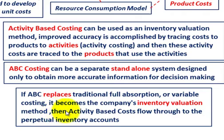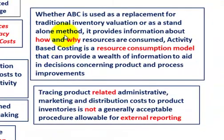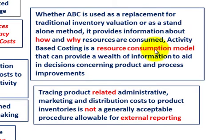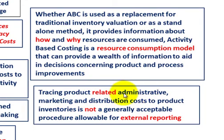If ABC costing replaces traditional full absorption or variable costing as the company's inventory valuation method, inventory-based costs flow through to the perpetual inventory accounts. Whether used as a replacement or standalone method, it provides information about how and why resources are consumed. ABC is a resource consumption model that aids decisions concerning products and process improvements, tracing overhead costs — administrative, marketing, sales, and engineering — to product inventories.